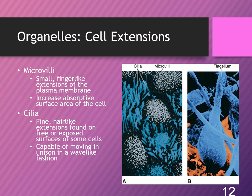Cilia are fine hair-like extensions found on the free or exposed surfaces of some cells. They are capable of moving in unison in a wave-like fashion. Cilia found on taste buds act like little antennae that allow them to sense different chemicals dissolved in saliva. Cells that line the respiratory system can have several hundred cilia capable of moving together, helping to propel mucus over the cells that line the respiratory tract and the reproductive tract, such as the fallopian tubes.